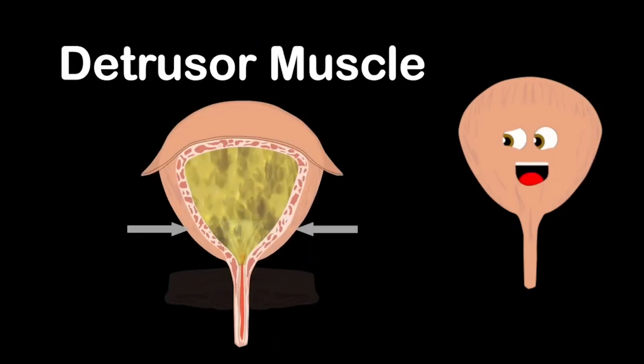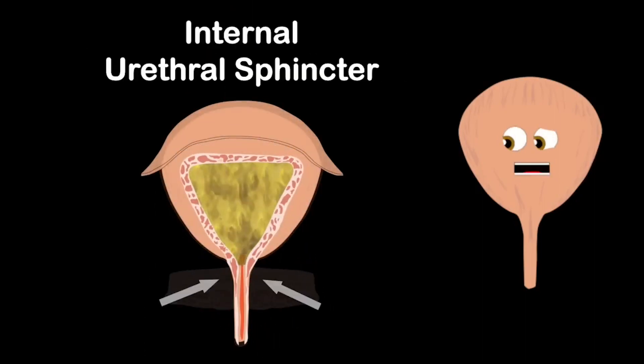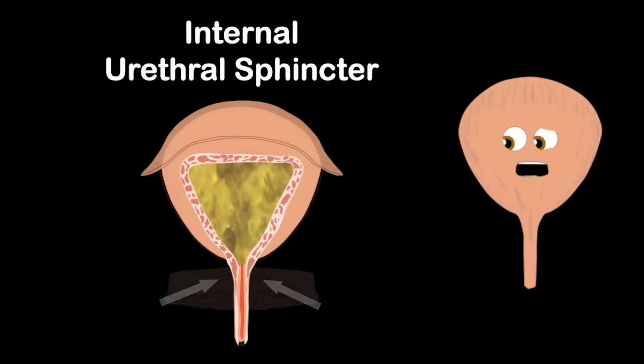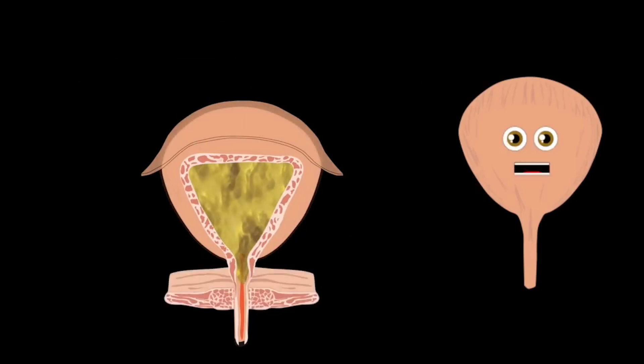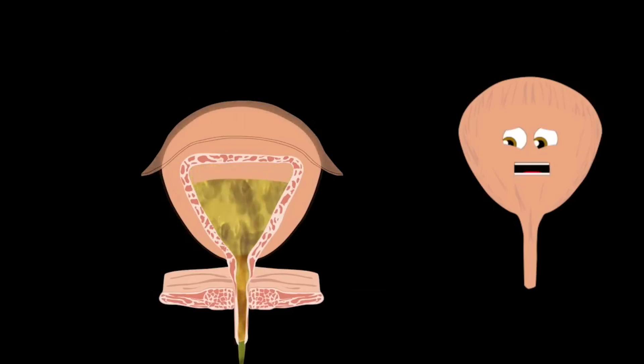The brain tells the detrusor muscle to contract while the internal urethral sphincter opens its effect. The external urethral sphincter relaxes as well. And the urine exits your body making you feel swell.